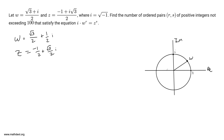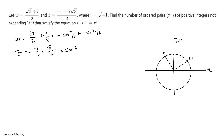Z is negative 1 half plus root 3 over 2 times i, so it's somewhere up here. The nice thing about complex numbers is that, aside from writing them as real plus imaginary times i, w also equals cosine of 30 degrees plus i sine of 30 degrees — remember, cosine 30° is root 3 over 2 and sine 30° is 1 half. In radians, that's cosine of π/6 plus i sine of π/6. Similarly, z equals cosine of 120°, which is 2π/3 radians, plus i sine of 2π/3.